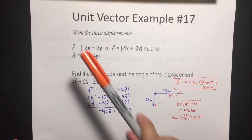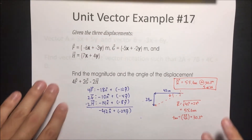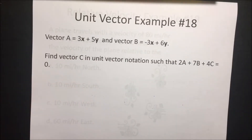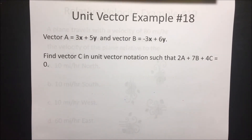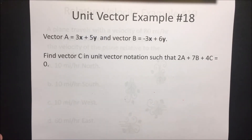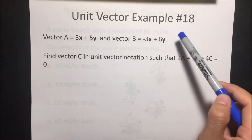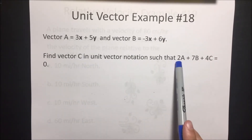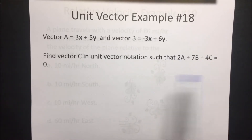Unit vector notation just means it's already broken down into its x and y components. Last example: vector A = 3x̂ + 5ŷ meters, and vector B = −3x̂ + 6ŷ meters. Find vector C in unit vector notation such that 2A + 7B + 4C = 0.